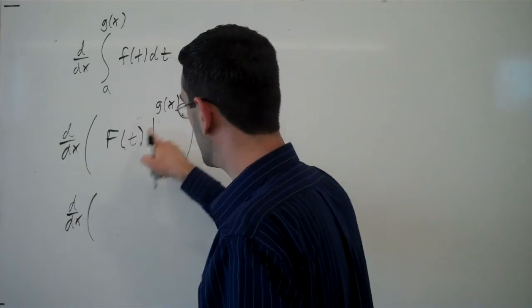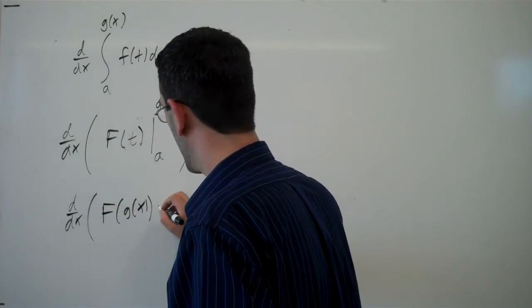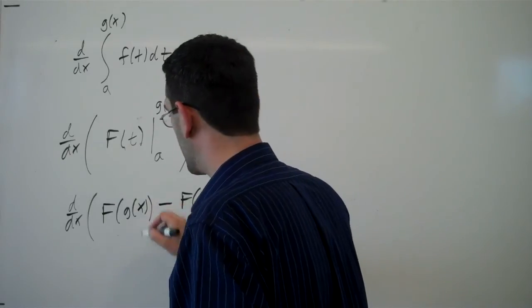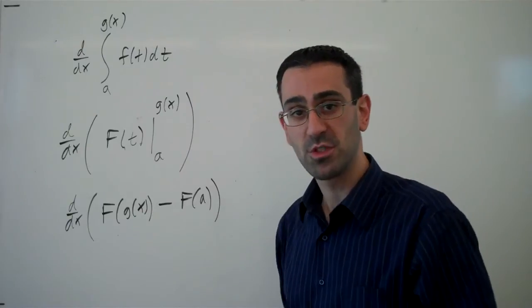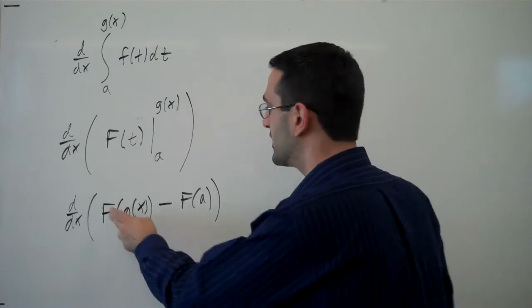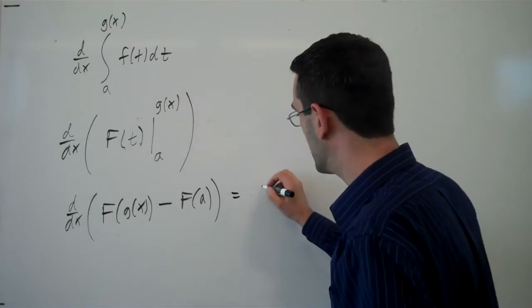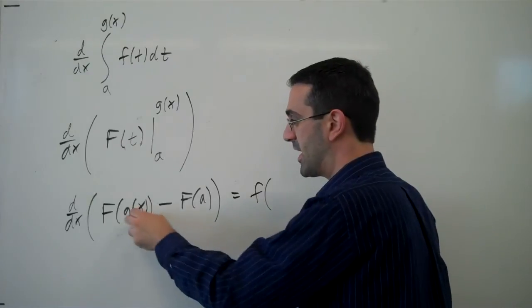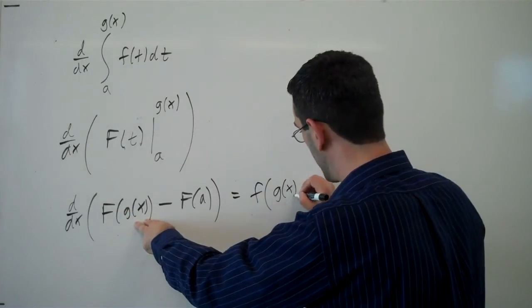So we would plug in g of x, and we would plug in a. And now we can take the derivative. Now here we have a composition of functions, which means we're going to need chain rule. So we're going to take the derivative of the outside function. Derivative of big F, remember, is little f. By definition, it was the antiderivative. Derivative of the outside function evaluated at the inside function.